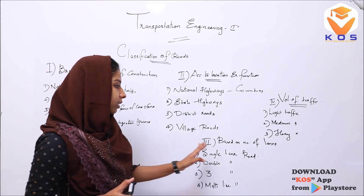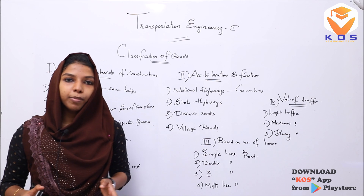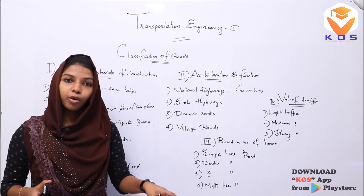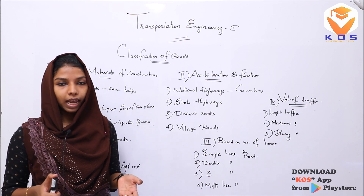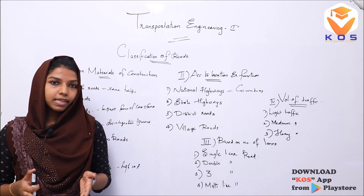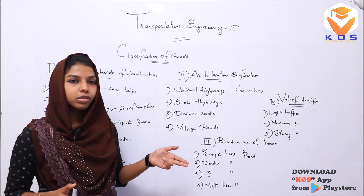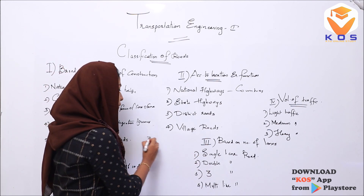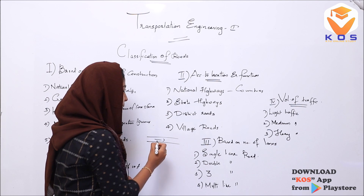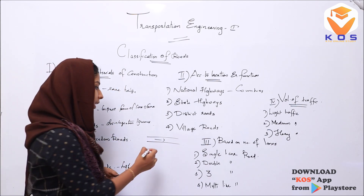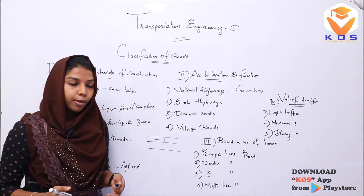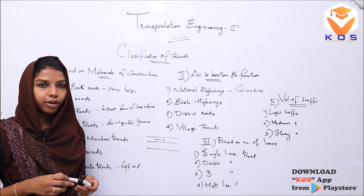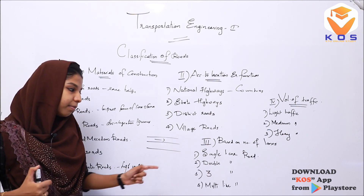The third classification is based on the number of lanes. We have single-lane roads with one path, double-lane roads with two lanes, three-lane roads, and multi-lane roads with more than three lanes.